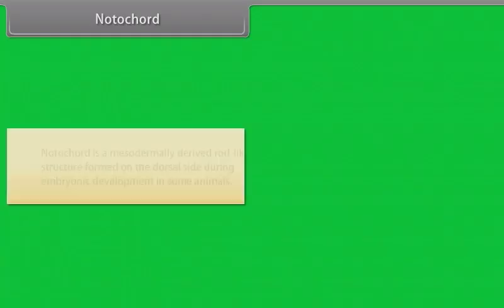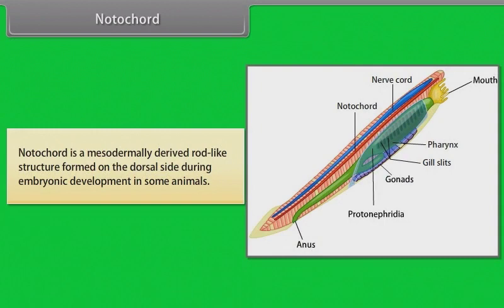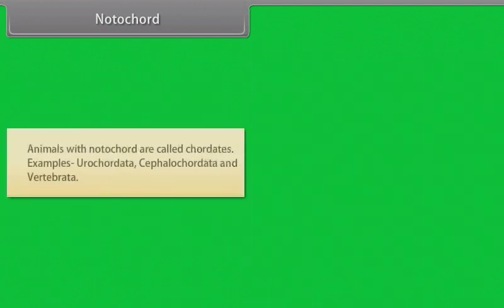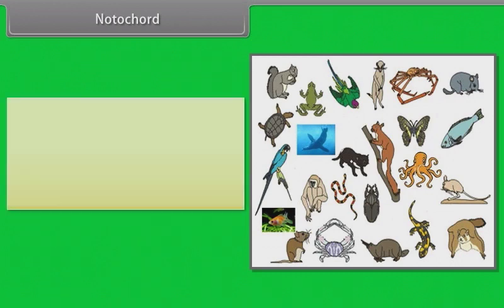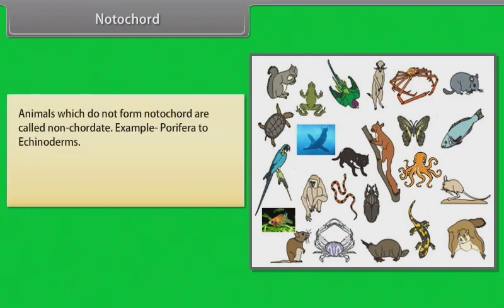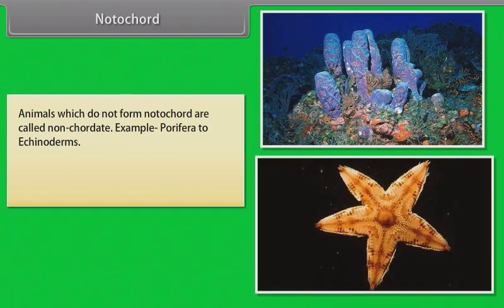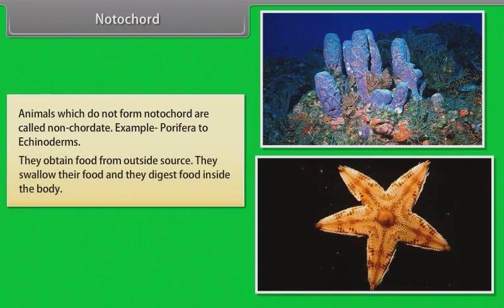Notochord is a mesodermally derived rod-like structure formed on the dorsal side during embryonic development in some animals. Animals with notochord are called chordates. Examples: Urochordata, Cephalochordata and Vertebrata. Animals which do not form notochord are called non-chordates. Examples: Porifera to Echinoderms.